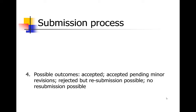Most papers that end up in the published literature have gone through at least one round of revision and resubmission. Journal editors want you to go through a round of revision to make sure the paper has been thoroughly vetted and is as good as it can be. So that's really what you're aiming for when you submit an original research manuscript — the reject-but-resubmit category. It sounds a little negative, but it's actually a pretty positive category.